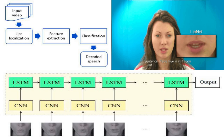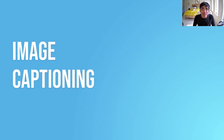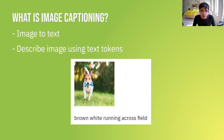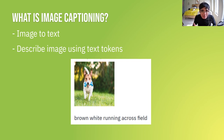That's basically it for lip reading. Now let's dive into our second use case out of four — image captioning. What is image captioning? Really, this is a process of converting from image to text — trying to describe an image using text tokens, in other words words. The name is pretty self-explanatory: caption an image.